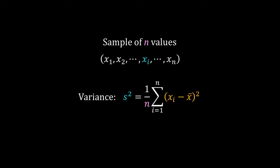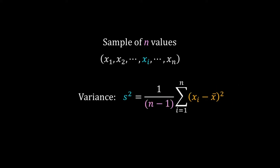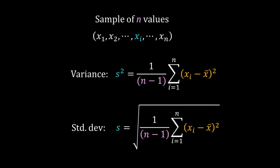It can be shown that the sample variance as we have defined here is a biased estimate of the population variance — in fact it underestimates the population variance. To correct our estimate we multiply the right-hand side by n divided by n minus 1, so the unbiased sample variance has n minus 1 in the denominator.